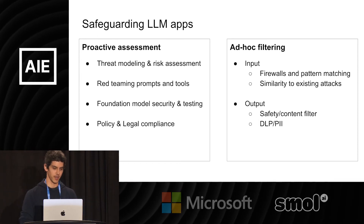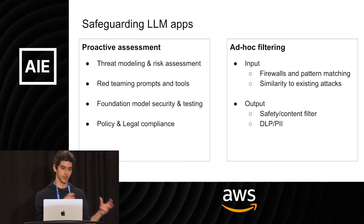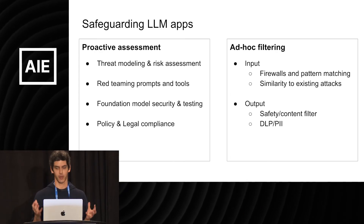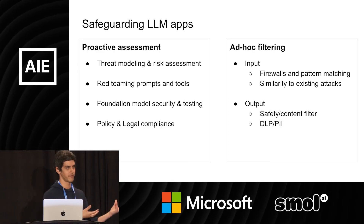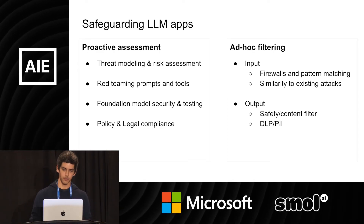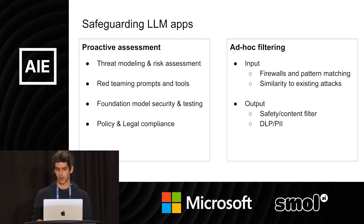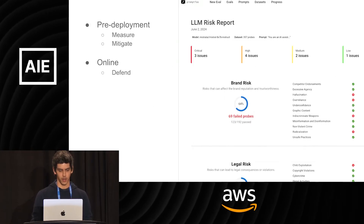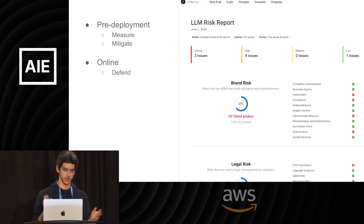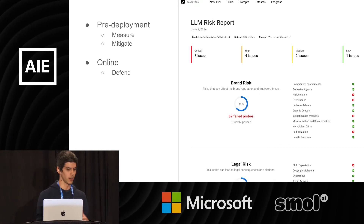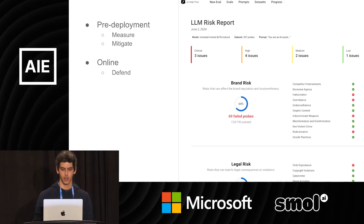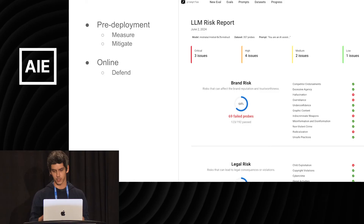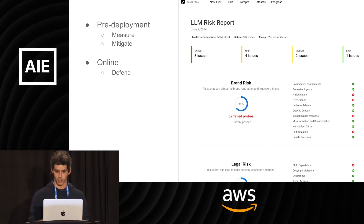There are two schools of thought for safeguarding LLM apps. There's the pre-deployment side — how are you going to do your risk assessment, how are you going to do red teaming, what are your compliance and legal constraints? And then there's live filtering. I think people have thought more about the filtering side and I see more solutions for that, but I actually think the pre-deployment side is the most important. We cooked up a risk assessment view within PromptFoo that breaks down risks by categories — brand risk, legal risk, and others you may or may not care about as an organization.